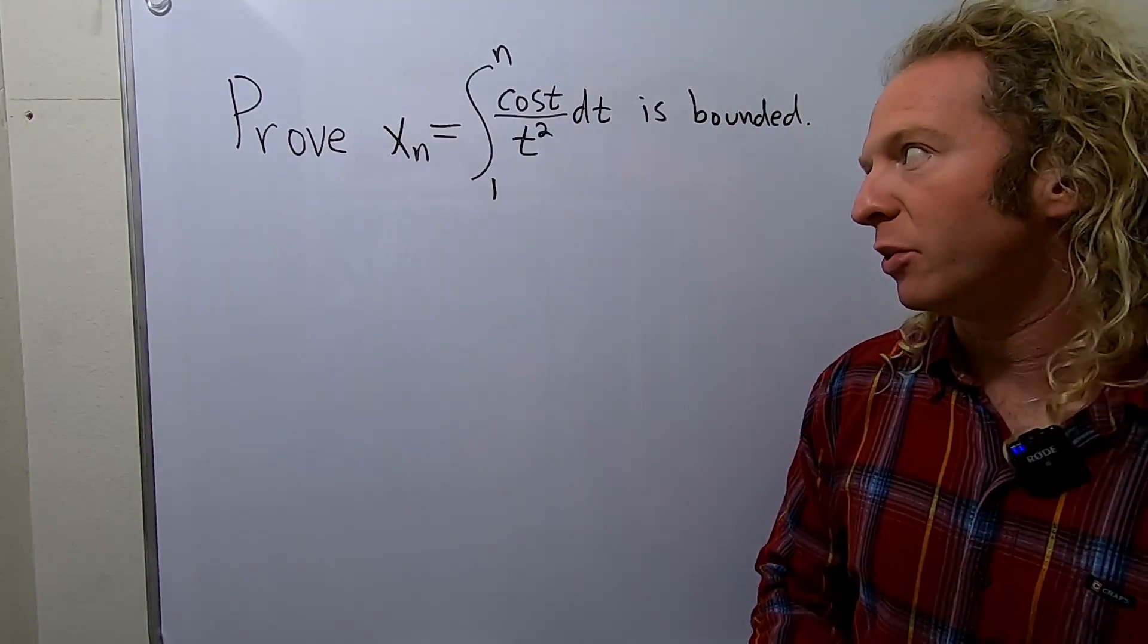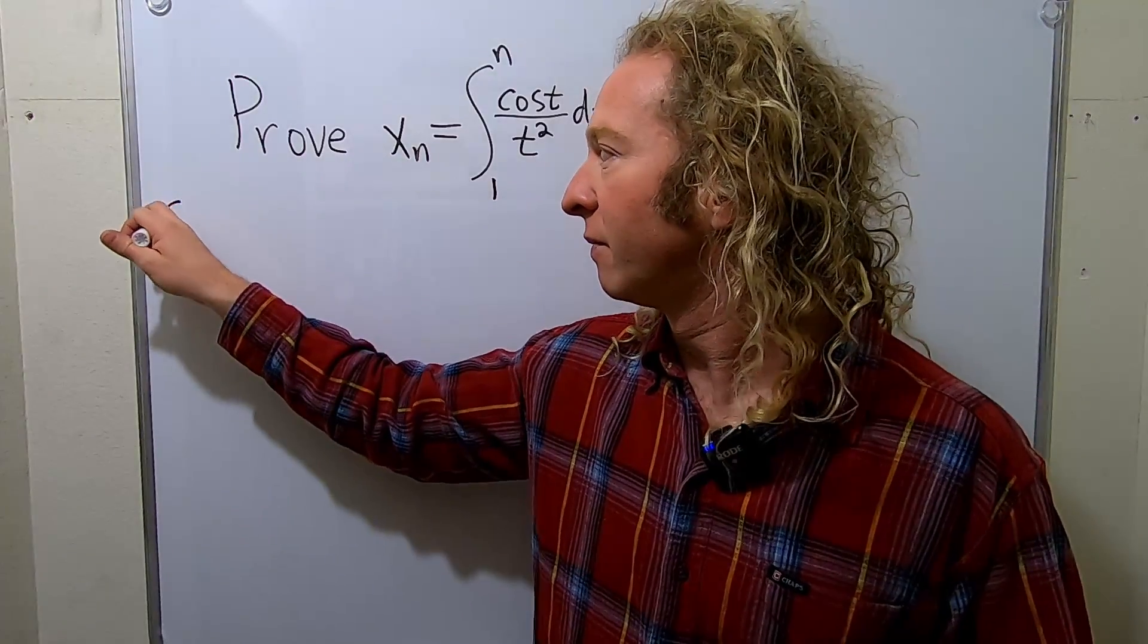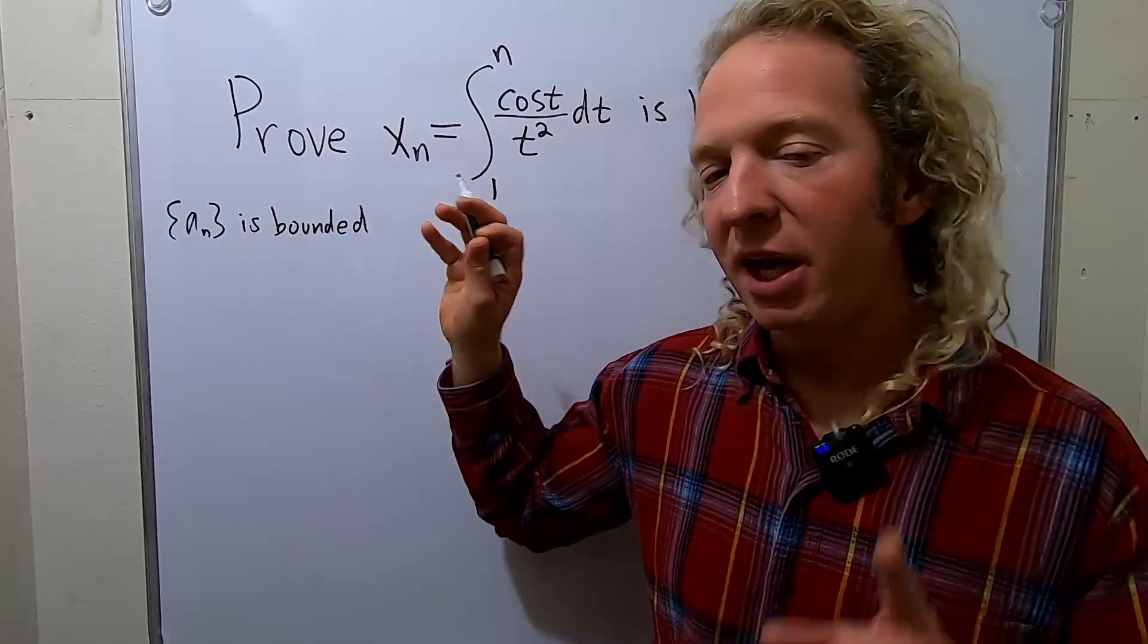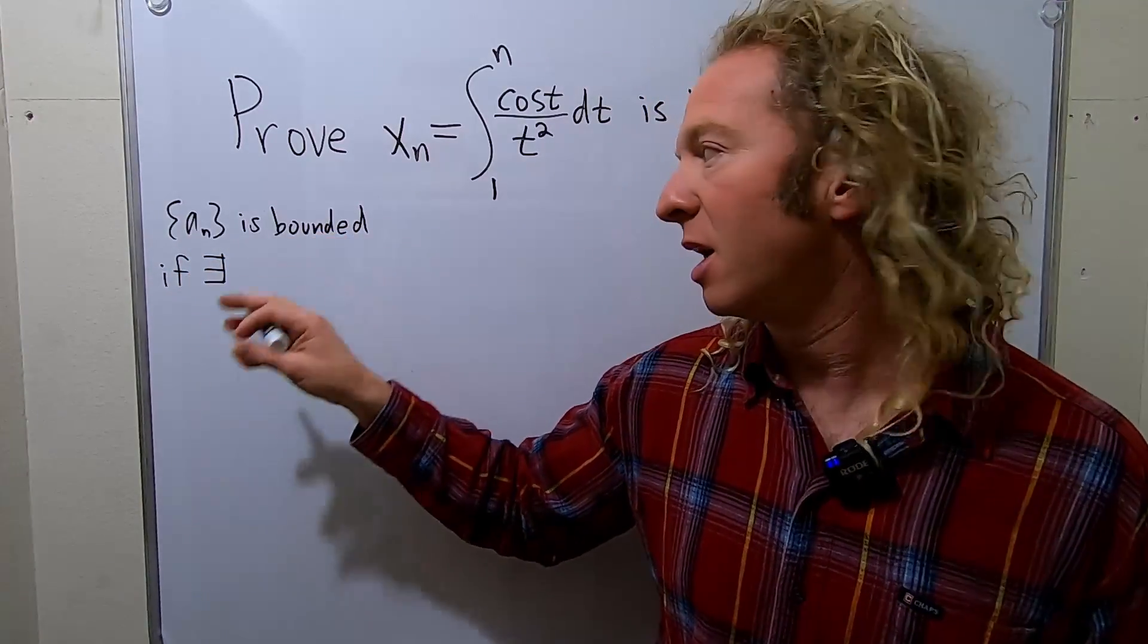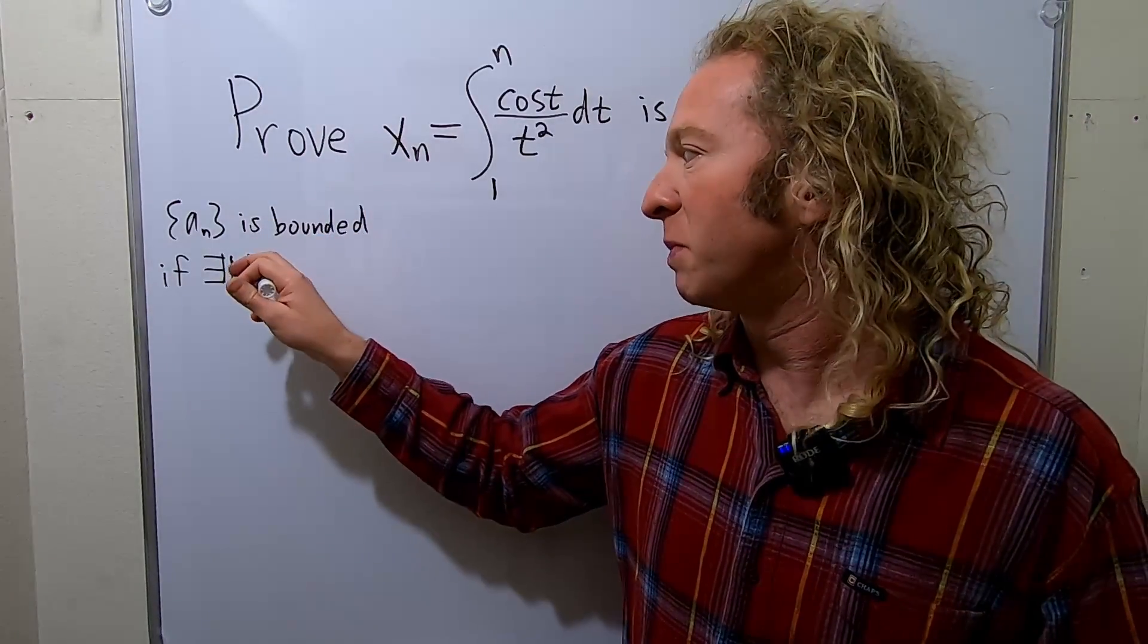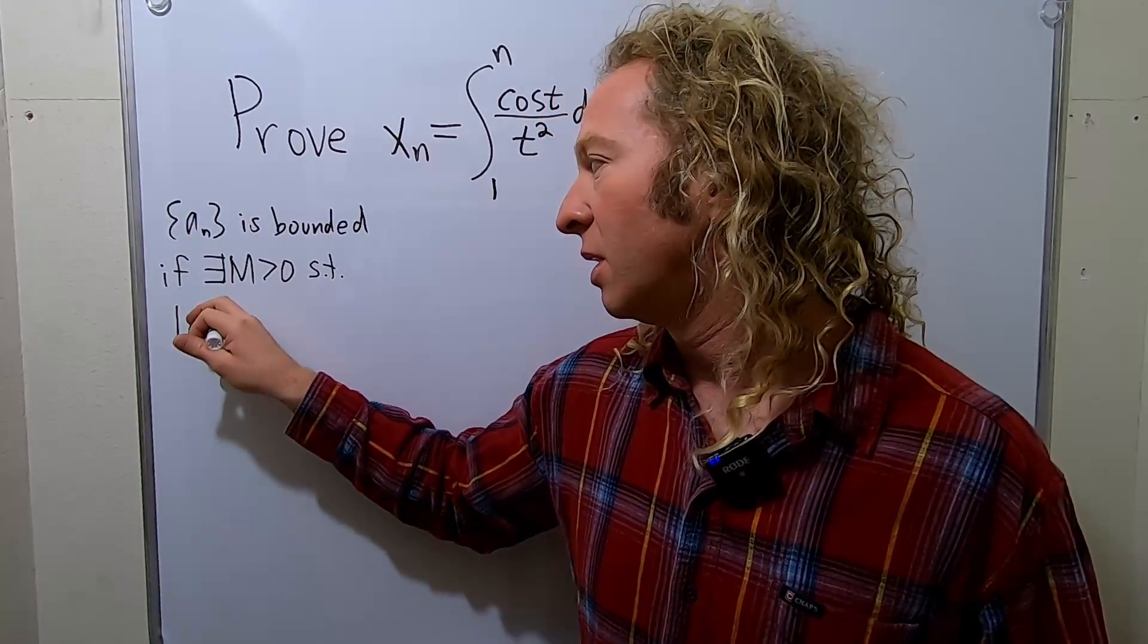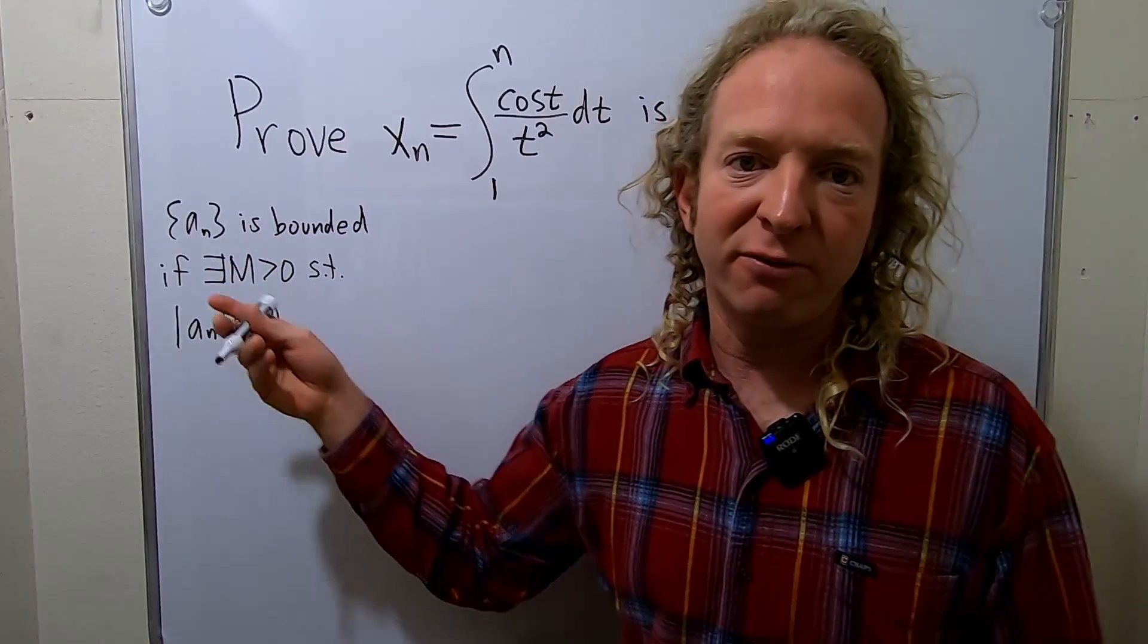So first let me recall what it means for a sequence to be bounded. We say a sequence, say a sub n, is bounded, and this is the actual definition of bounded, if there exists a number, so this backwards e means exists, I'm going to use the letter m, you could use any letter you like, and we can assume it's positive such that if you take the absolute value of a sub n, it's less than or equal to big m, and this has to be true for all integers n for which the sequence is defined.